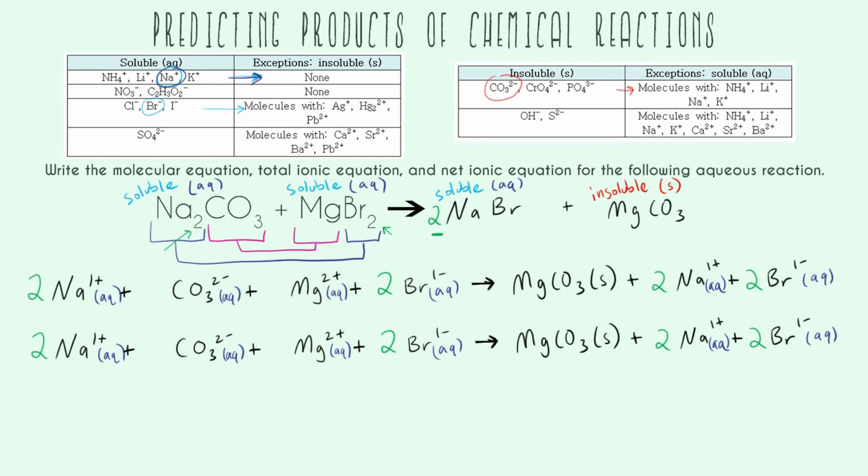So I can just look and I can see, oh yeah, I have 2 sodium 1 plus aqueous on the left-hand side and on the right-hand side. That means it didn't really do anything. It just kind of sat there the whole time. So I can cross it out.